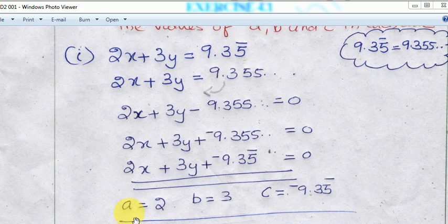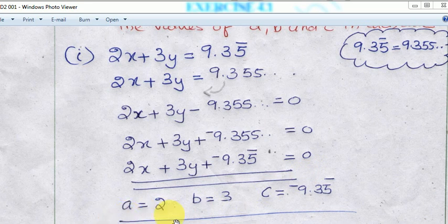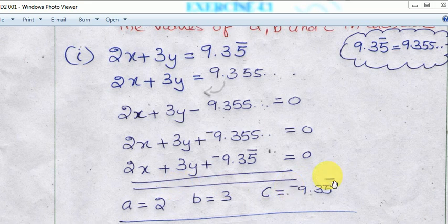The coefficient of x is A, the coefficient of y is B, and the constant is C. So A is equal to 2, B is equal to 3, and C is equal to minus 9.35 bar. That is the answer — highlight it with a double underline.